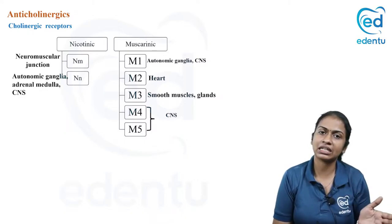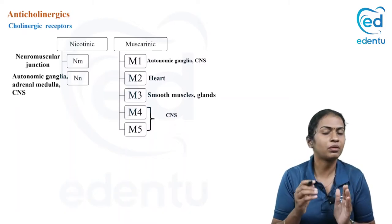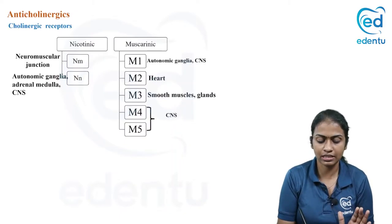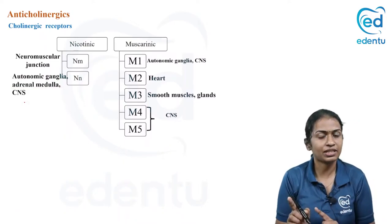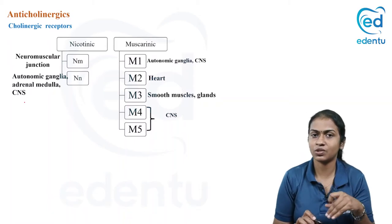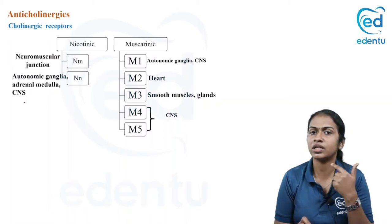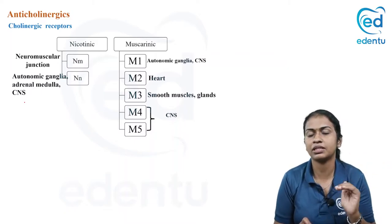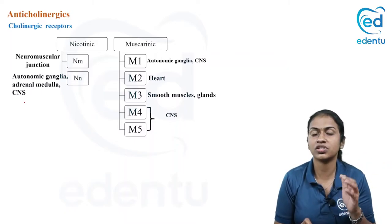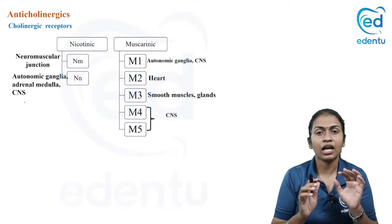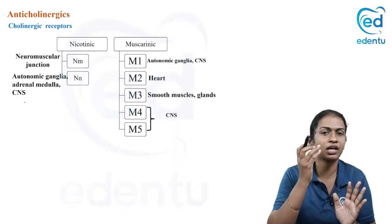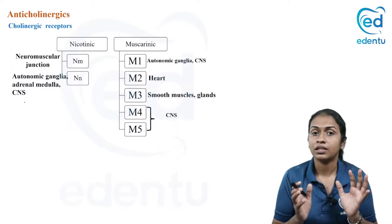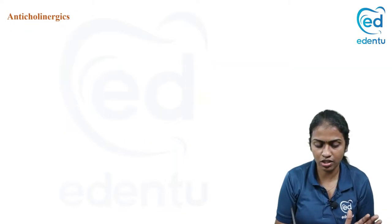We classify cholinergic receptors into muscarinic receptors and nicotinic receptors. Muscarinic receptors include M1 through M5. M4 and M5 have not much clinical role; they are present in the CNS. M1 is present on gastric glands, M2 in the heart, and M3 elsewhere — in the eyes, glands, and smooth muscles including bronchus, GIT, and bladder. Nicotinic receptors are divided into NM, present on the neuromuscular junction, and NN, present on autonomic ganglia.